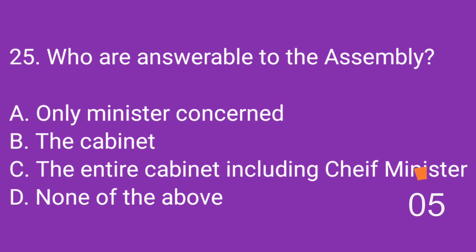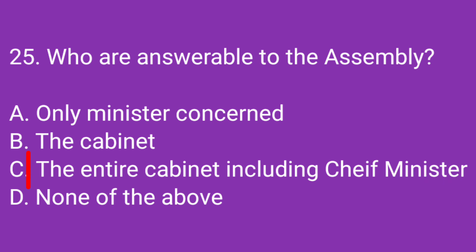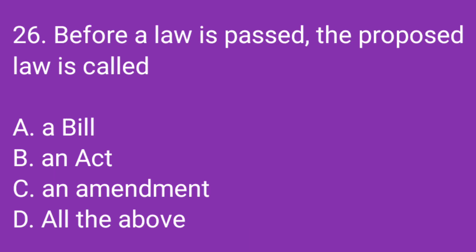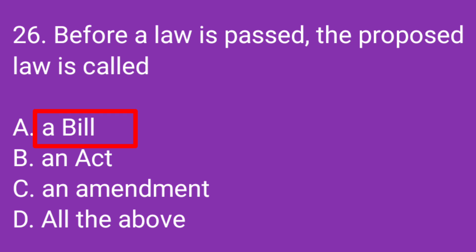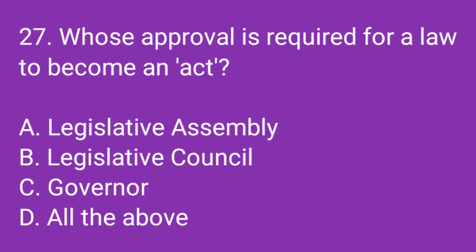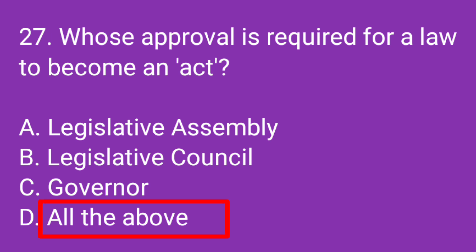Question number 25: Who are answerable to the assembly? Correct answer: The entire cabinet including Chief Minister. Question number 26: Before a law is passed, the proposed law is called? Correct answer: A bill. Question number 27: Whose approval is required for a law to become an act? Correct answer: All the above — Legislative Assembly, Legislative Council, and Governor.